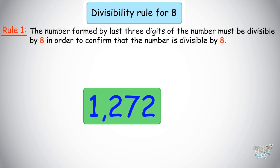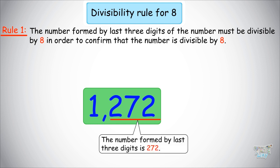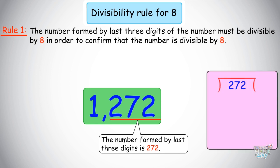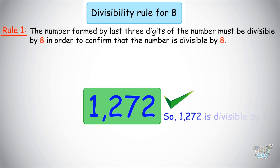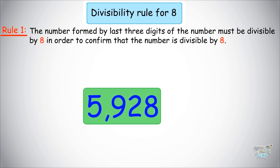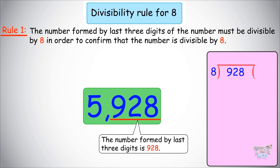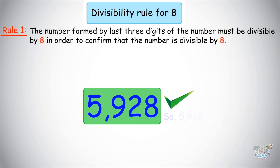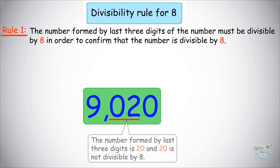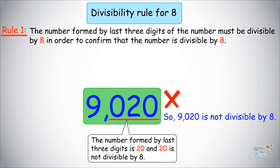Next number is 1,272. The number formed by the last 3 digits is 272, and 272 is divisible by 8 (= 34), so the whole number is divisible by 8. Next number is 5,928: the last 3 digits are 928, and 928 divided by 8 is 116, so yes, this number is divisible by 8. Next number is 9,020: the last 3 digits form 020, and 20 is not divisible by 8, so the whole number is not divisible by 8.